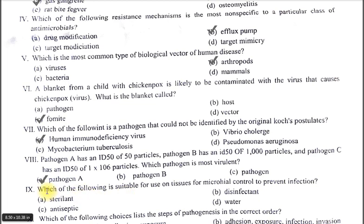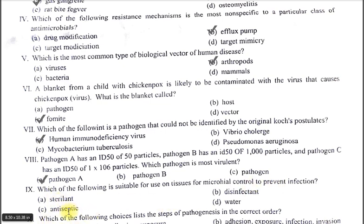Next MCQ: which of the following is suitable for use on tissues for microbial control to prevent infection? A. Sterilant. B. Disinfectant. C. Antiseptic. D. Water. The correct option is C, antiseptic.